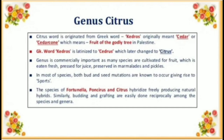Genus Citrus: The word 'Citrus' is originated from the Greek word 'Kedros,' which originally meant cedar or cedar cone, meaning fruit of the godly tree in Palestine. The Greek word was latinized to 'Cedrus,' which later changed to 'Citrus.' The genus is commercially important as many species are cultivated for fruit which is eaten fresh, used for juice, or preserved in marmalades and pickles. The species of Fortunilla, Poncella and Citrus hybridize freely producing natural hybrids. Similarly, budding and grafting are easily done reciprocally among the species and genera.